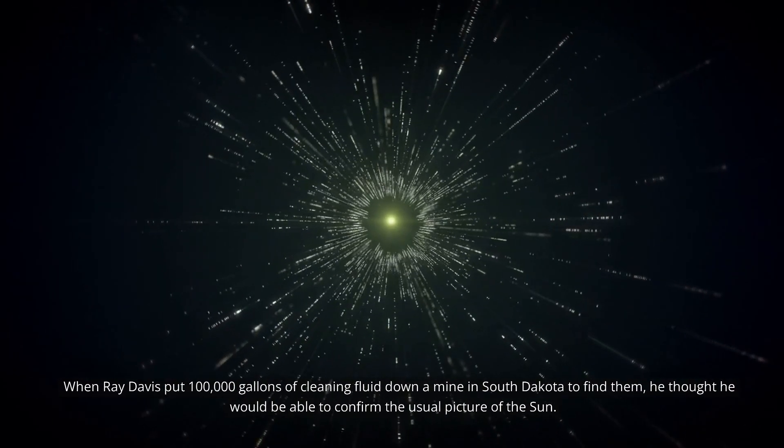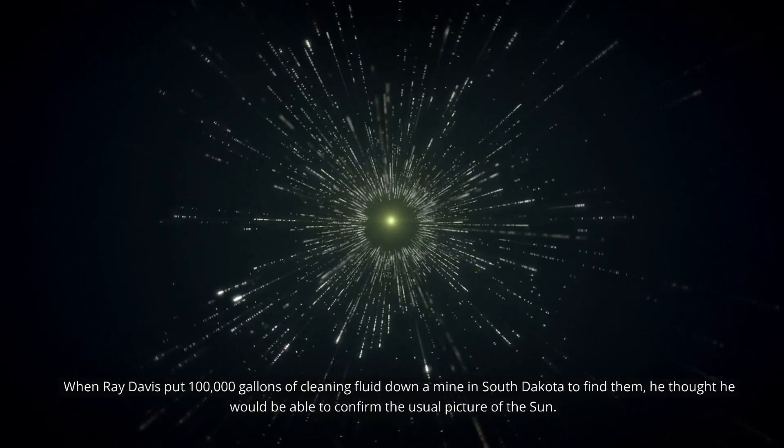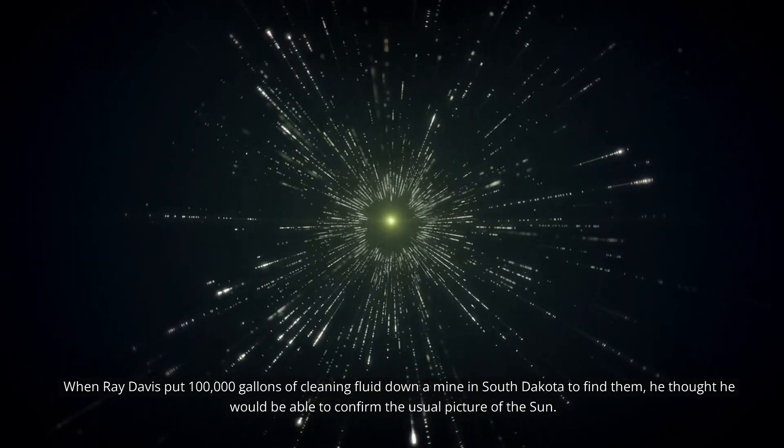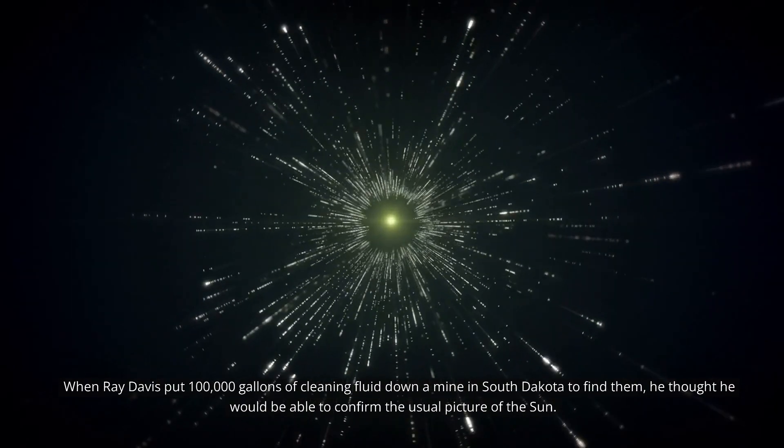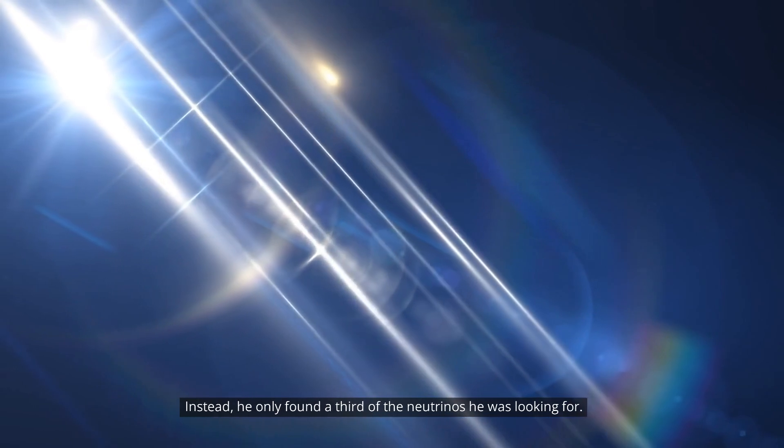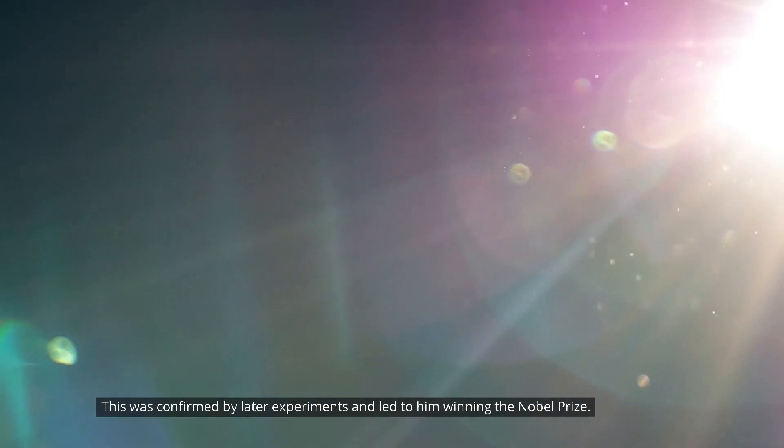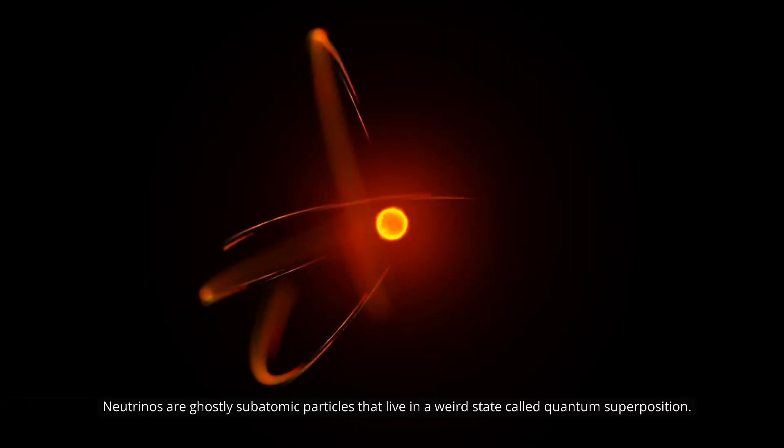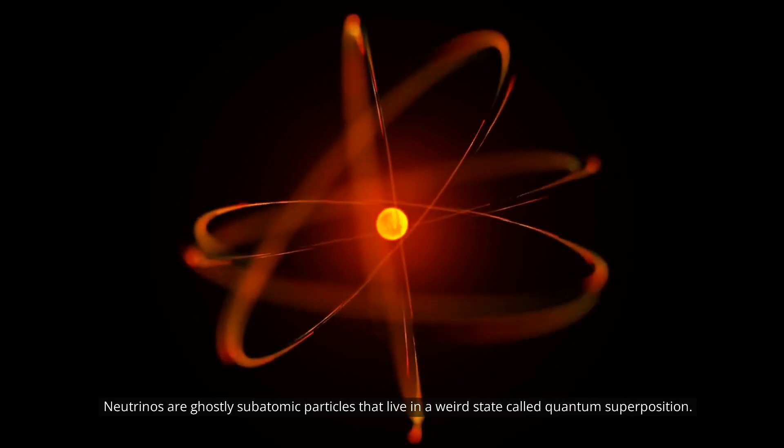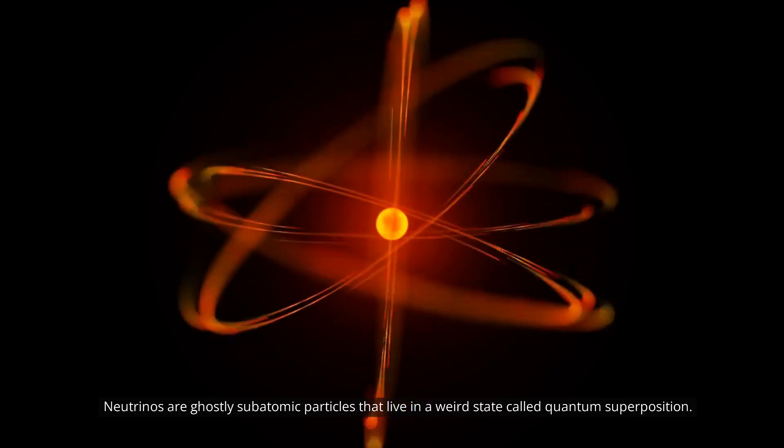When Ray Davis put 100,000 gallons of cleaning fluid down a mine in South Dakota to find them, he thought he would be able to confirm the usual picture of the Sun. Instead, he only found a third of the neutrinos he was looking for. This was confirmed by later experiments and led to him winning the Nobel Prize.